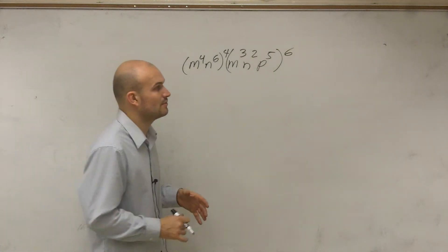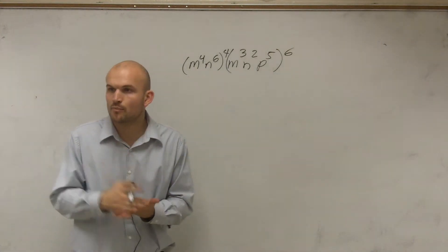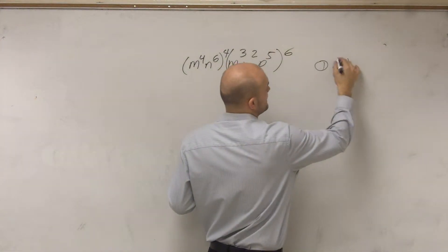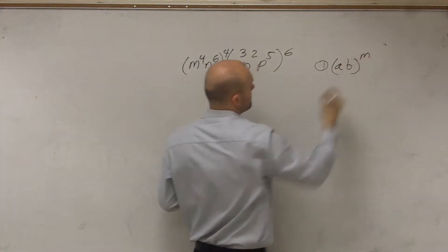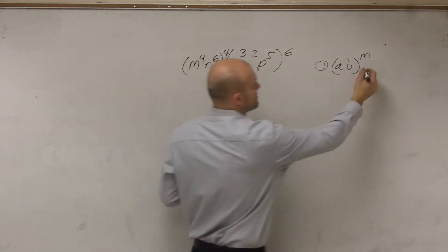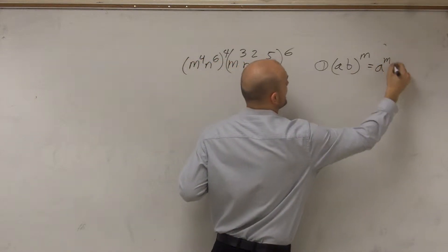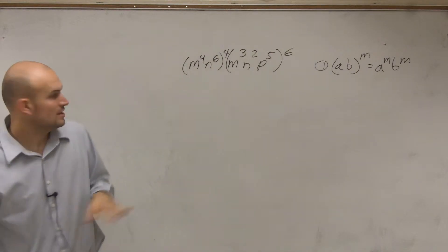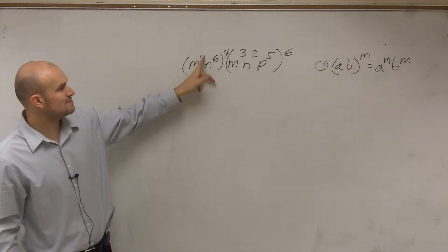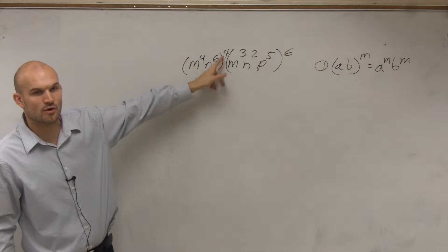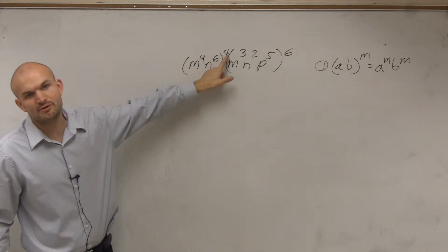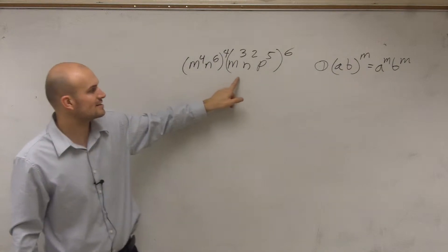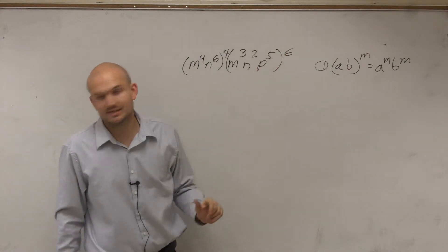And the first property of exponent we want to use is the power of product. And what the power of product says is if I have a times b raised to the m power, that means both a and b are going to be raised to that m power. So what that means is since I have m to the fourth n to the sixth raised to the fourth, both of these terms need to be raised to the fourth. And also, all terms inside of this parenthesis need to be raised to the sixth. So therefore,